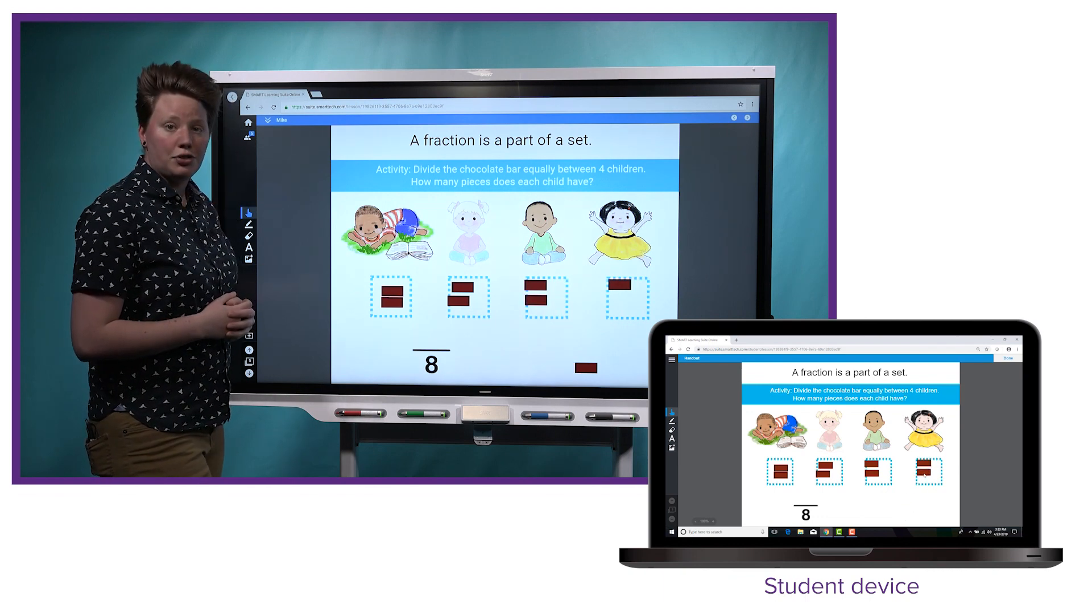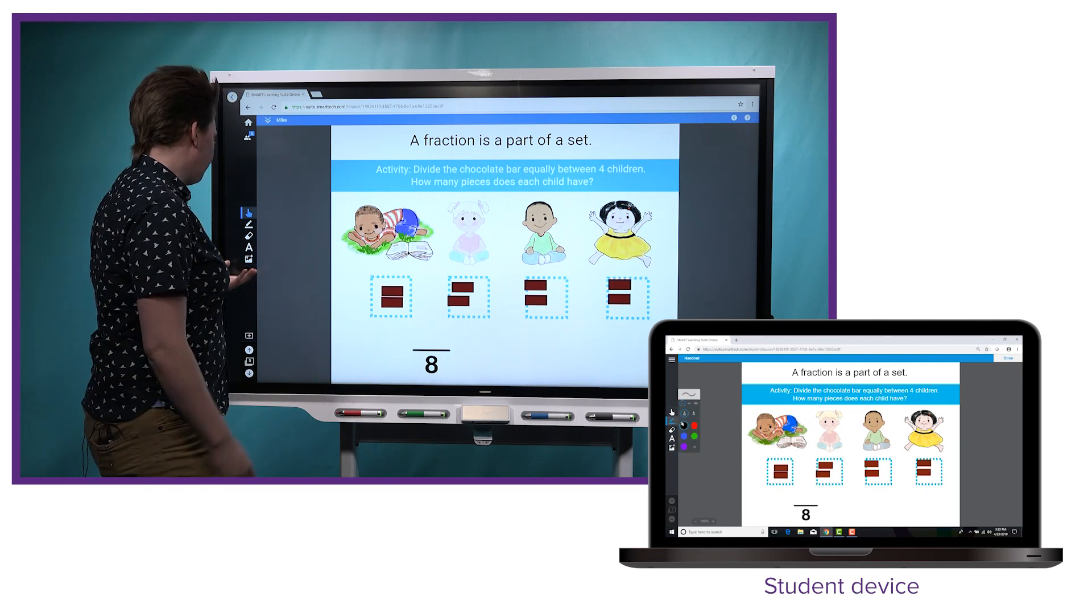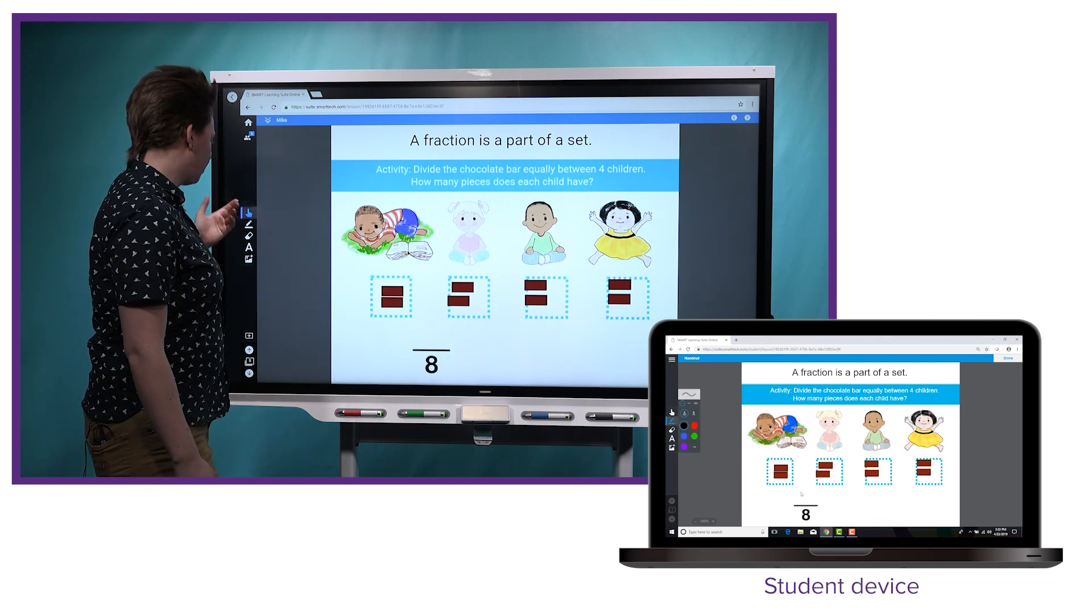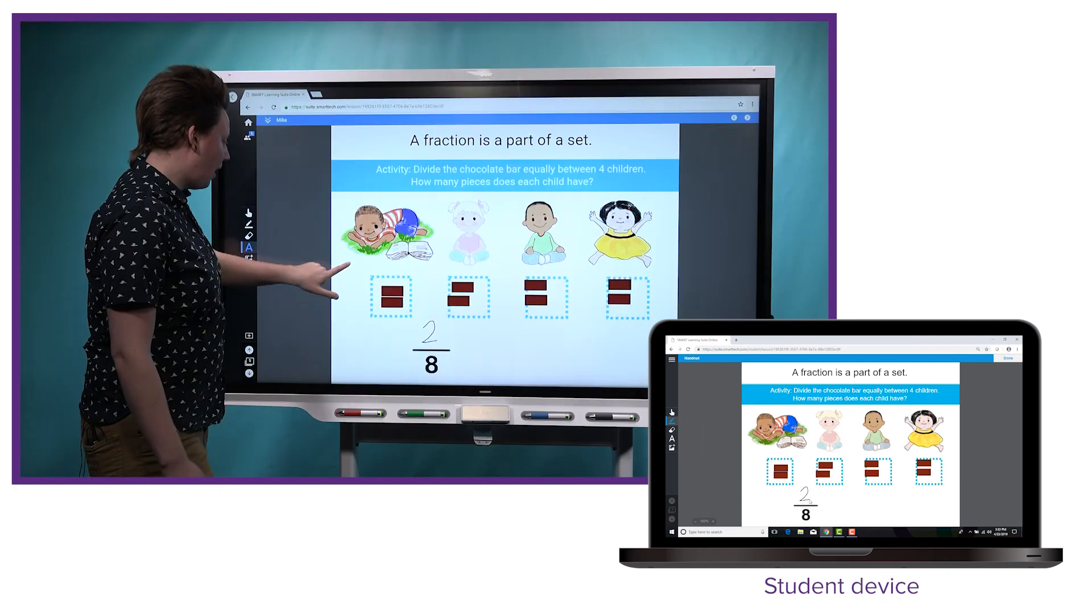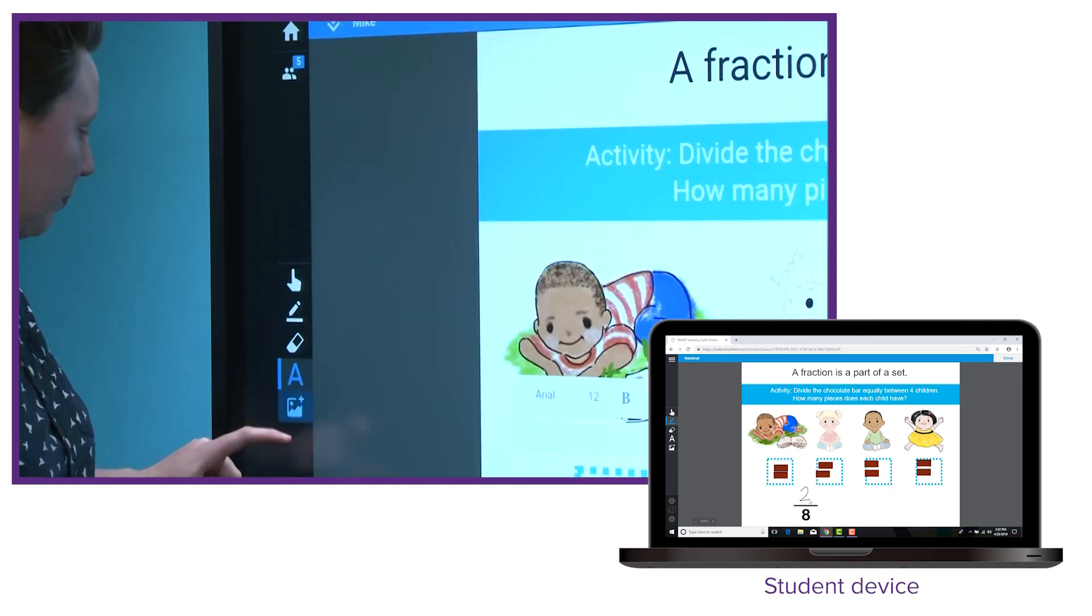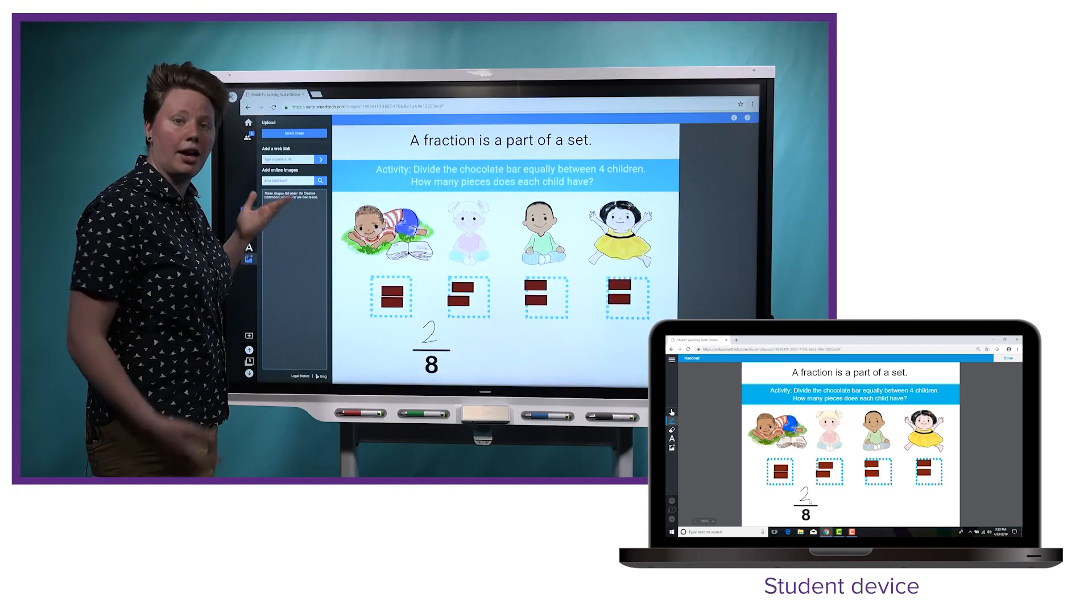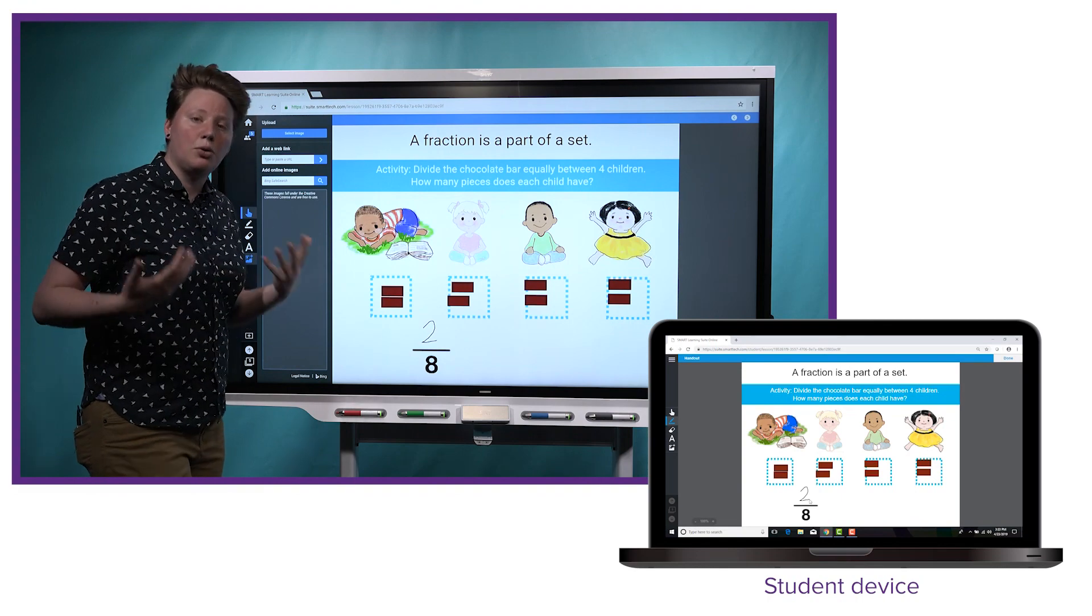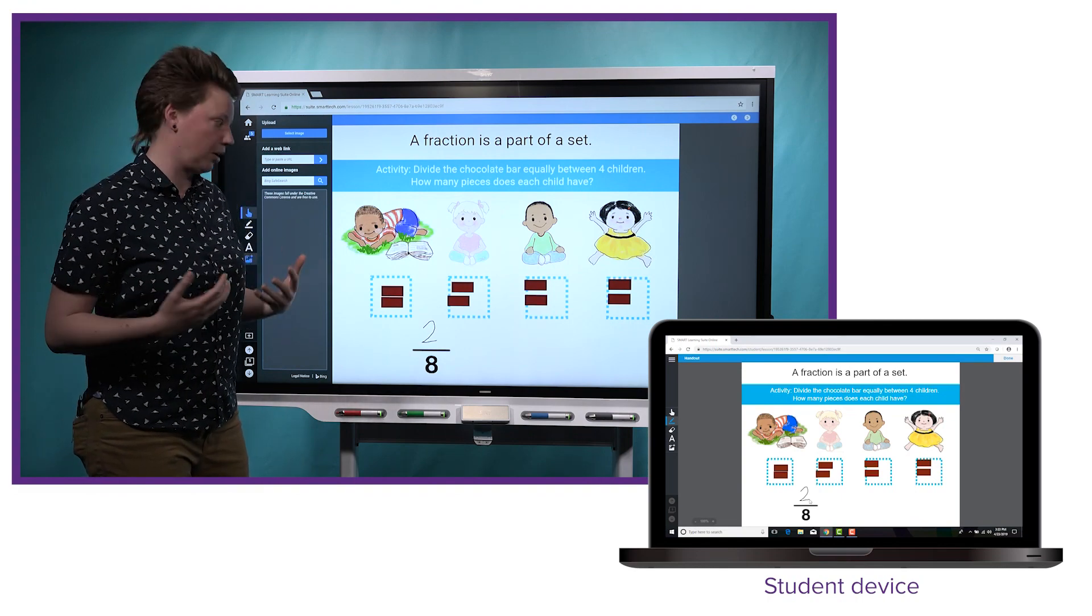You'll notice another new feature here, which will look familiar to you if you've used the workspace activity, is that we've expanded the toolbar. So in addition to the selector tool and the pen tool, which have always been here, students can also now add typed text or they can actually add a web link or search online and find an image to add to the activity, which would be great if you're doing a bit more of an in-depth project where you want them to contribute their own work to the page.